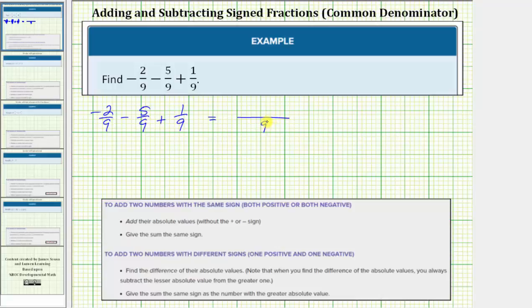The numerator is going to be the sum and difference of the numerators. So the numerator is going to be negative two minus five plus one.